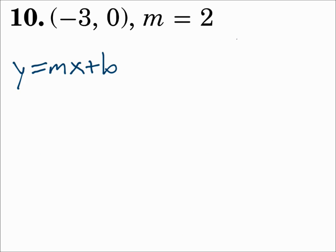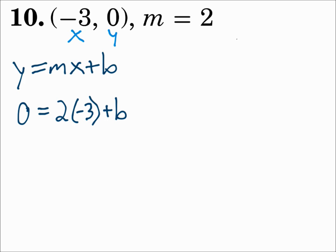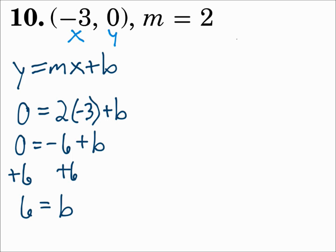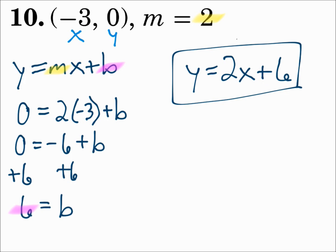Number 10: what about the equation of a line that goes through the point negative 3, 0 and has a slope of 2? Find the slope first — it's 2. Then use your x and y from the point, and your m, and find b. y is 0, equals m is 2, times x is negative 3, plus b. Solve for b. 2 times negative 3 is negative 6. Add 6 to both sides and b is 6. Now substitute into the final answer: m is 2, b is 6. y equals 2x plus 6.